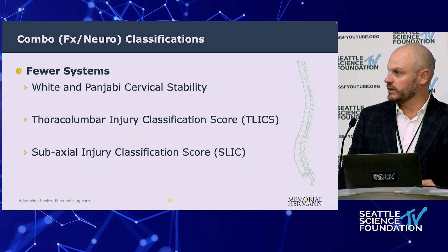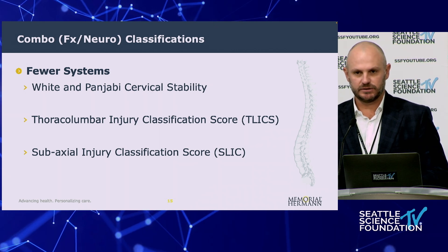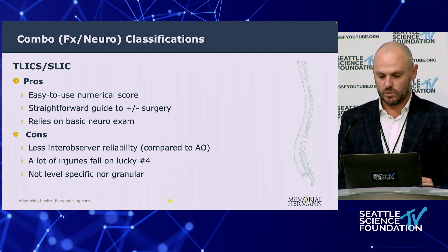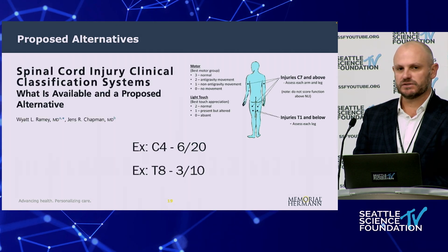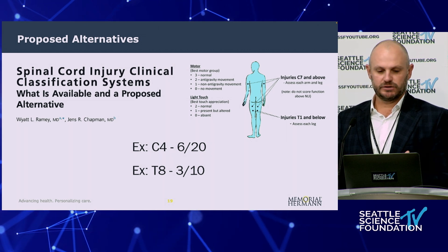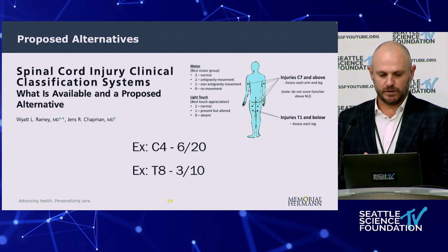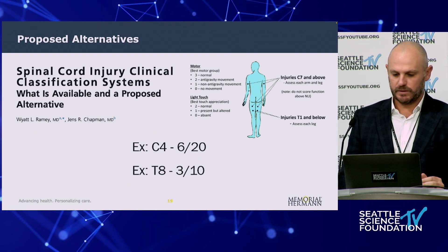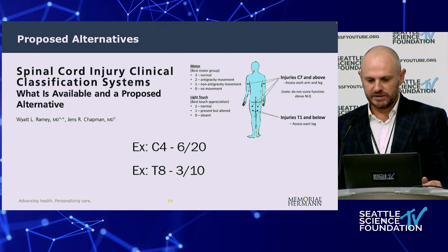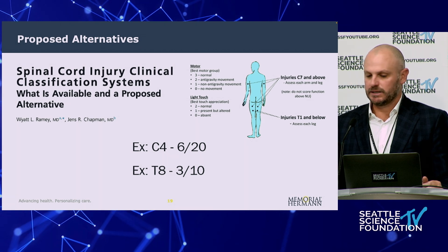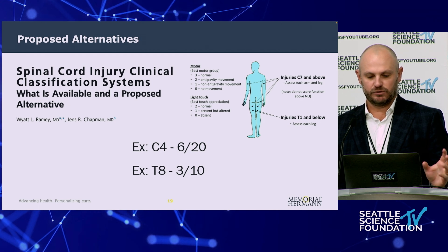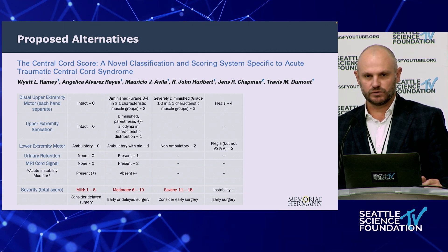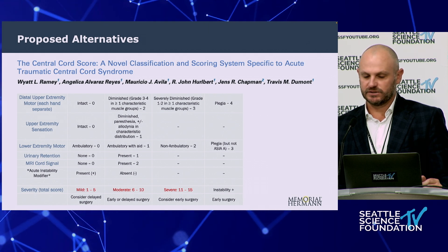With regard to our current systems, I'm just brushing over a lot of this because we've already discussed it in detail today — White and Punjabi cervical stability score, the T-Lex, and the subaxial score. Last time I gave this talk, I was tasked with looking at future alternatives. Jens and I published together in Neurosurgery Clinics of America about a possible alternative looking at the best level of function below the level of injury, simplifying that to get away from a hypergranular exam such as the ASIA. We've also done work trying to come up with a more useful scoring system for teasing out the severity of central cord syndrome.